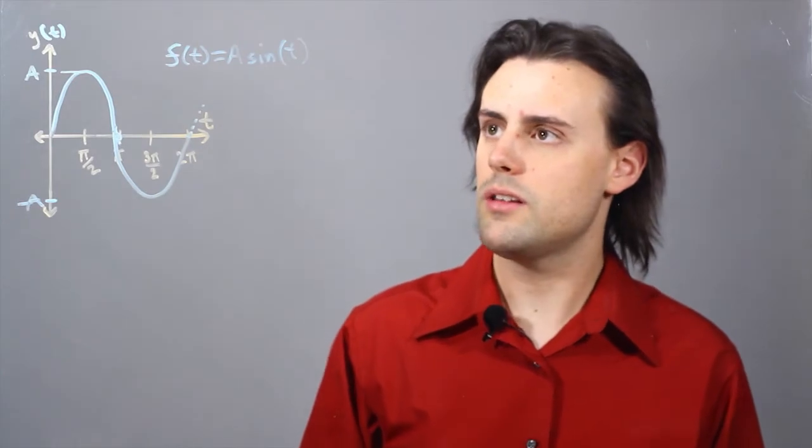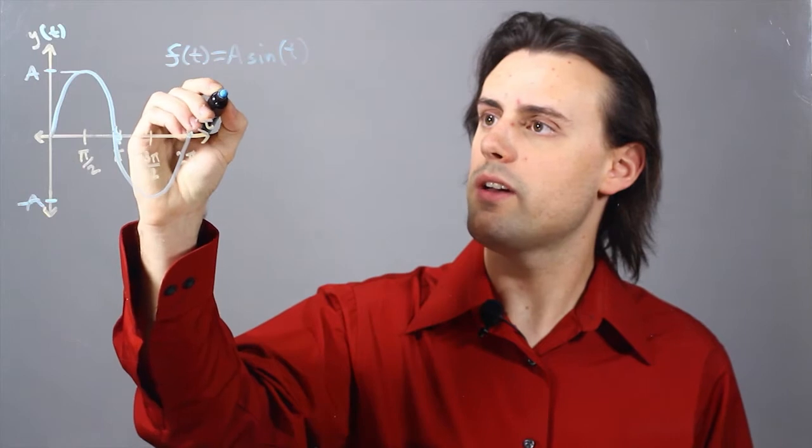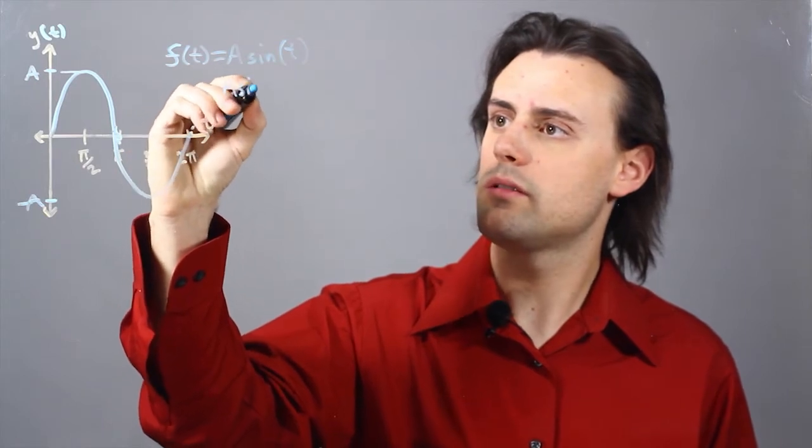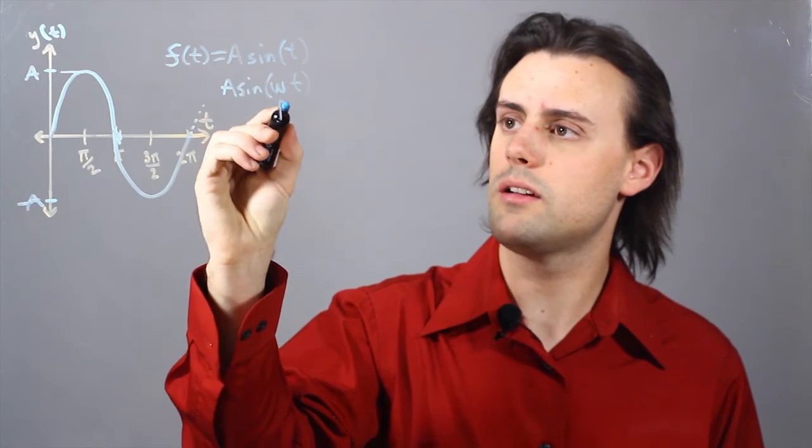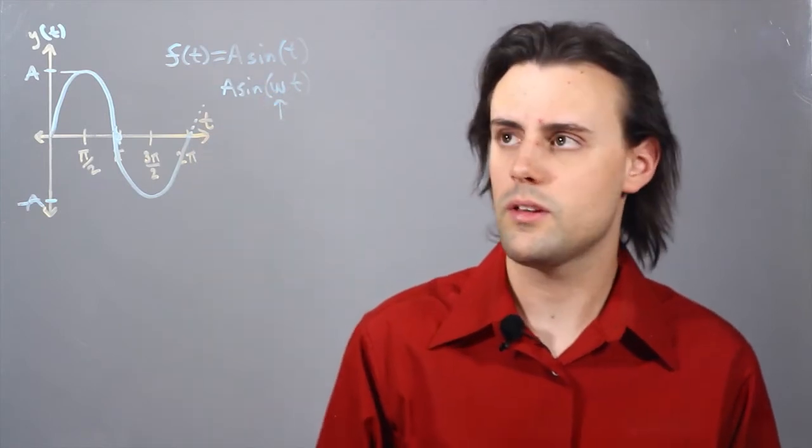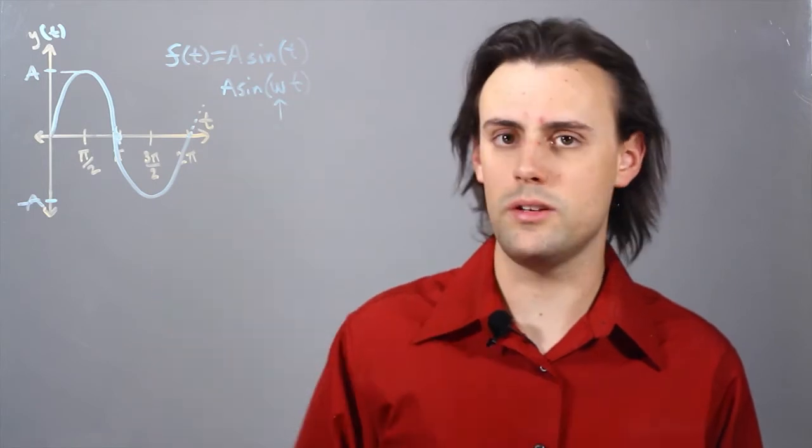But it turns out that generally I can have a frequency omega t inside of the sinusoid. And if this frequency is higher then my period will be smaller.